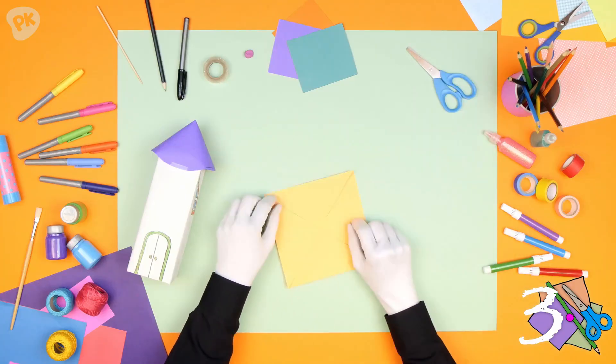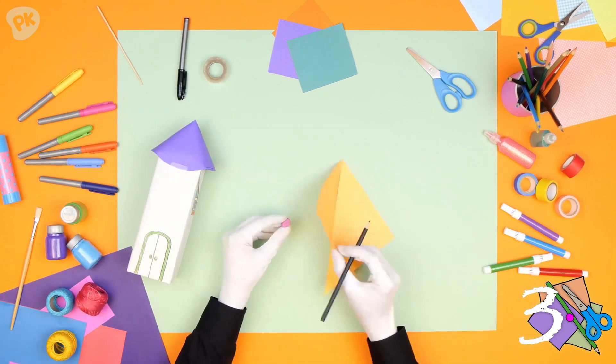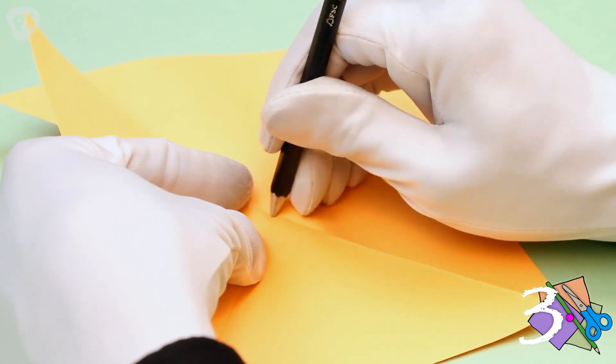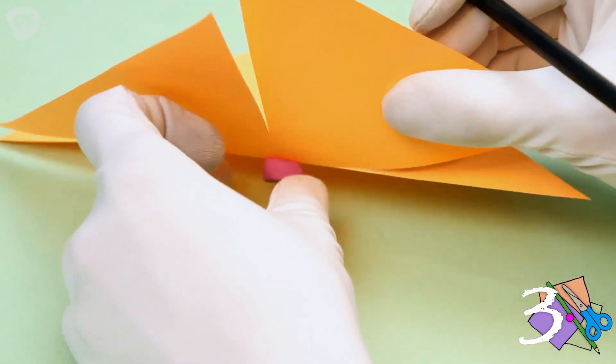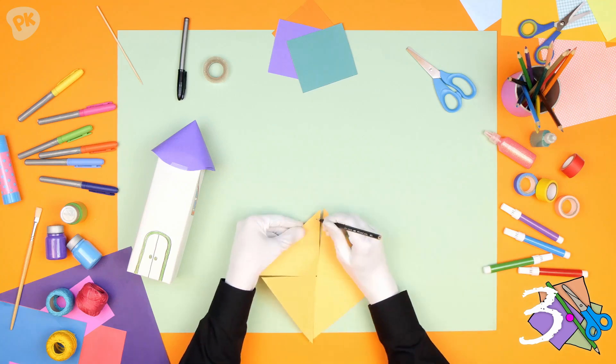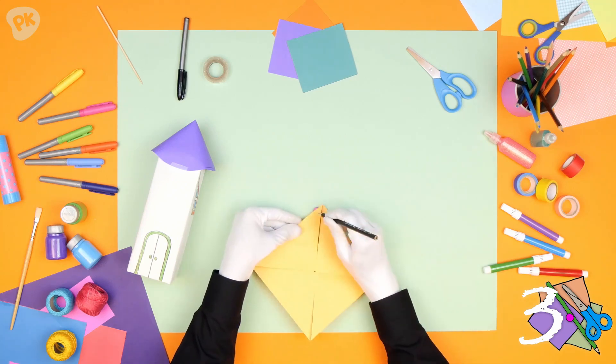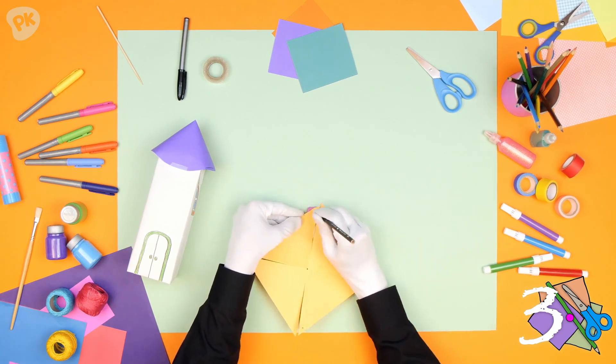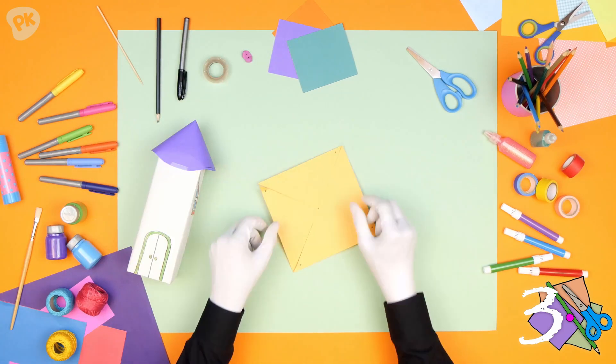Now, we need to make holes through the paper. Get your pencil and a small ball of Play-Doh. Place the ball of Play-Doh underneath the middle of the paper like this and poke a hole through the paper. Next, we need to poke holes at the tip of each corner like this. In total, you should have one hole poke in the middle and four hole pokes at each corner.